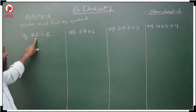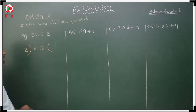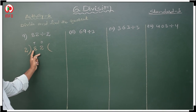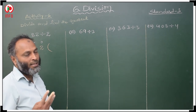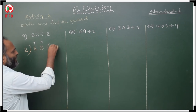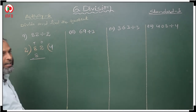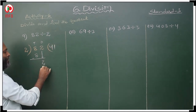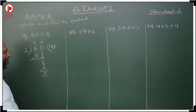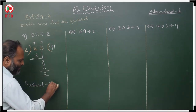9th question: 82 divided by 2. 82 is the dividend, 2 is the divisor. This is in 1's place and 10's place. The extreme left digit 8 is greater than the divisor, so no need to take 2 digits. In the 2 table: 2 fours are 8 tens, so write 4. 8 minus 8 is 0. Then take 2 ones. 2 times 1 one is 2 ones, so write 1. 2 minus 2 is 0. Quotient is 41.